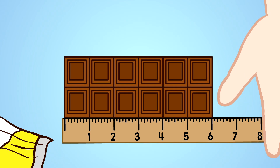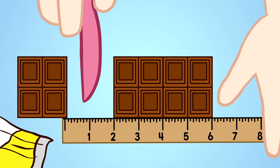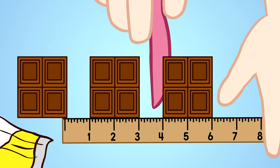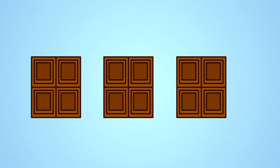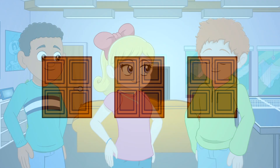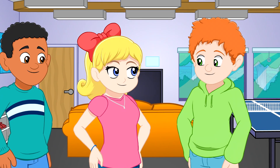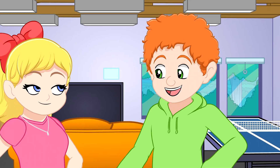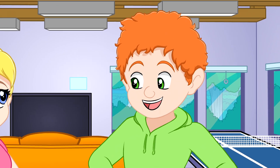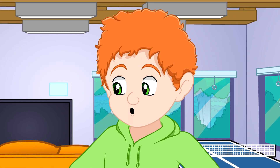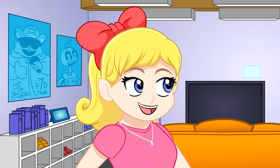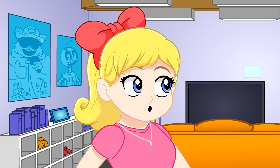That's two inches for Dennis, two inches for Newman, and two inches for me. Now I get it. You have to divide a candy bar, or anything else, into parts that are the same size and shape to use a fraction. That's right. We call parts that are the same size and shape congruent parts.